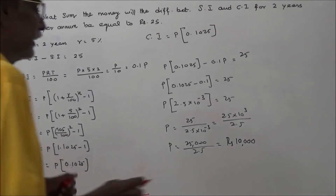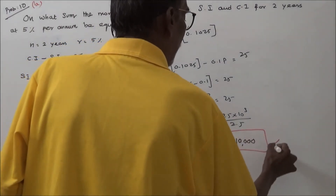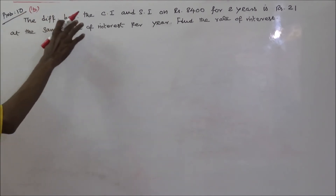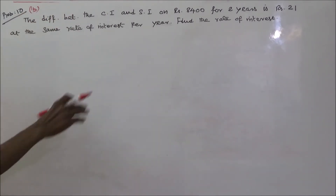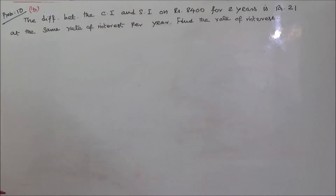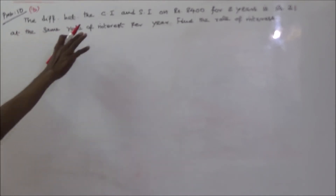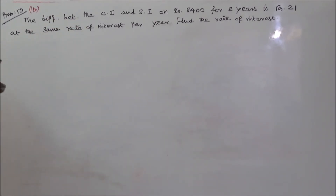This is the answer. The difference between simple interest and compound interest for 2 years at 5% per annum equals 25 when P is 10,000 rupees. This is how you work out this problem. Next problem: the difference between compound interest and simple interest on Rs. 8,400 for 2 years is Rs. 21 at the same rate of interest per year. Find the rate of interest R.